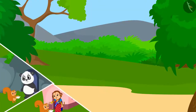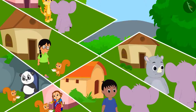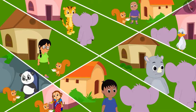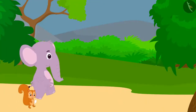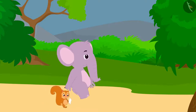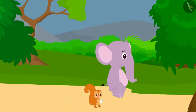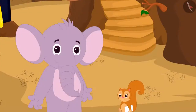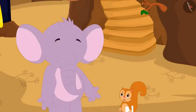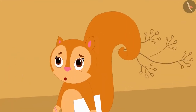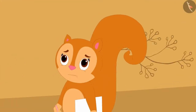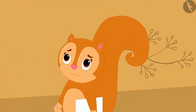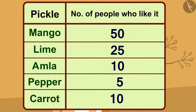Chanda and Appu go to people's homes to find out which pickle people like. By the end of the day, they completed their table by asking a hundred people their choice. They returned to Chanda's house. Chanda says, 'Appu, I am tired of wandering around the village all day long. And now, I don't understand anything after seeing so many numbers.'